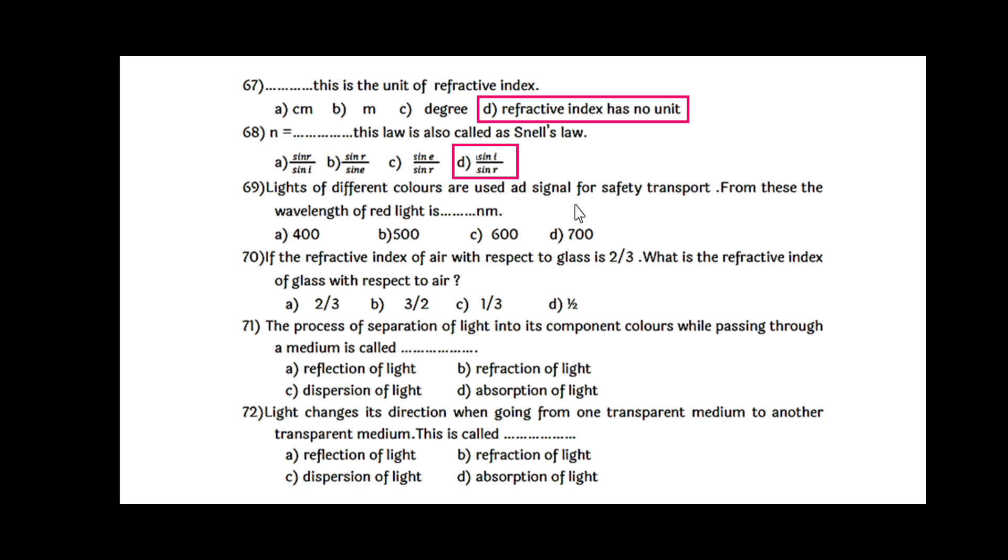Lights of different colors are used in signal for safety transport. The wavelength of red light is around 700 nanometer. If the refractive index of air with respect to glass is 2 upon 3, then what is the refractive index of glass with respect to air? Refractive index of air with respect to glass and refractive index of glass with respect to air are reciprocal of each other. So the value gives you 3 upon 2.